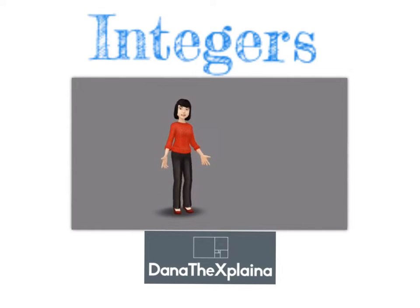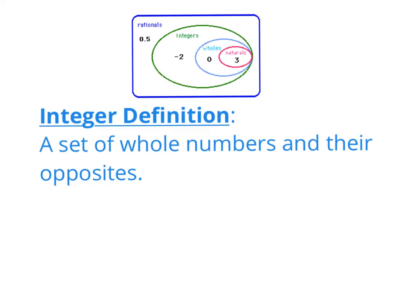What is an integer, and what can we do with integers? Alright, so what is an integer? The definition of an integer is a set of whole numbers and their opposites. So I want you to pause the video, write that definition down, and I'm going to talk about what the definition means.